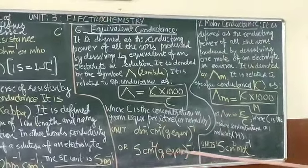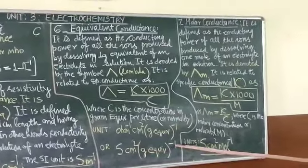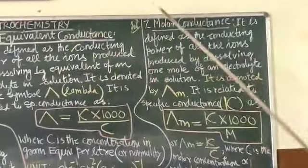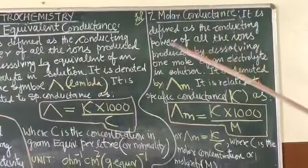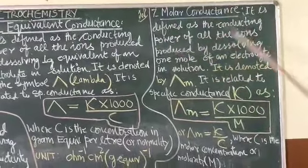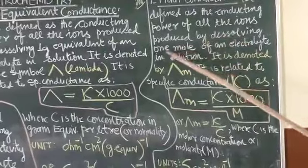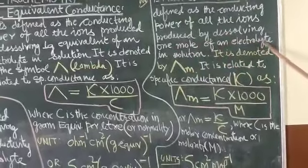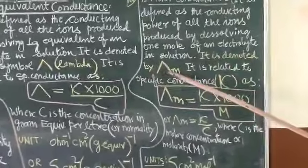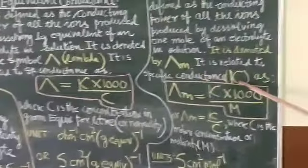Coming to the next, very important. This is important, this is important, this is very important: molar conductivity. It is defined as the conducting power of all the ions produced by dissolving one mole of an electrolyte in solution. It is denoted by lambda m. It is related to specific conductance kappa.